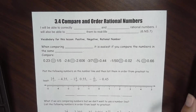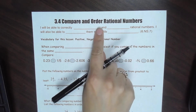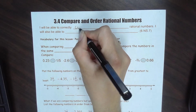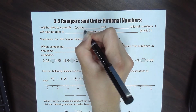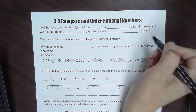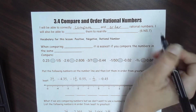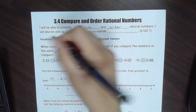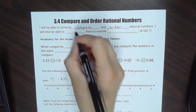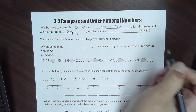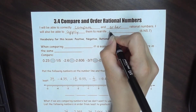Welcome back. This is Lesson 3.4 Journal. We are comparing and ordering rational numbers. I will be able to correctly compare and order rational numbers. I will also be able to apply them to real life situations.